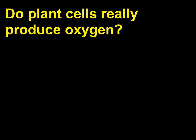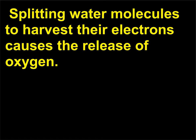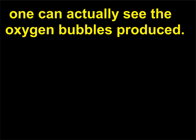Do plant cells really produce oxygen? Yes, plant cells produce oxygen through the process of photosynthesis. Splitting water molecules to harvest their electrons causes the release of oxygen. By submerging a small piece of an aquatic plant in a beaker containing water, one can actually see the oxygen bubbles produced.